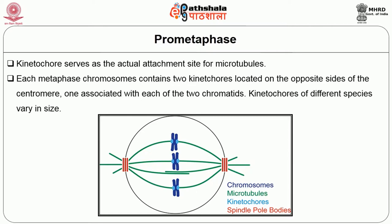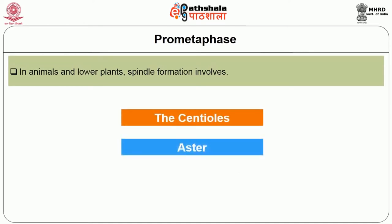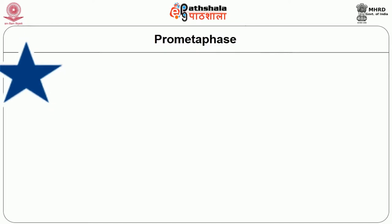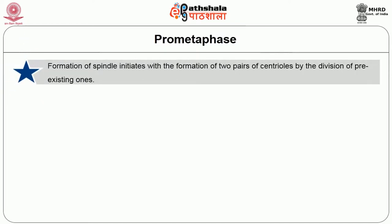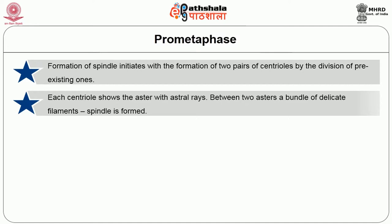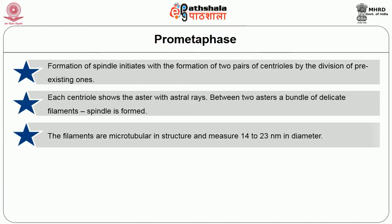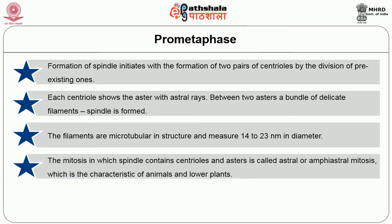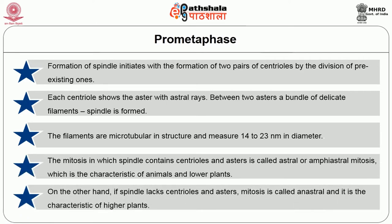Kinetochores of different species vary in size. In animals and lower plants, spindle formation involves centrioles, asters and astral rays. Formation of the spindle initiates with two pairs of centrioles dividing from pre-existing ones. Each centriole shows an aster with astral rays, and between two asters, a bundle of delicate filaments forms the spindle. The filaments are microtubular, measuring about 14 to 23 nanometers in diameter. Mitosis with centrioles and asters is called astral or amphiastral mitosis, characteristic of animals and lower plants; without them, it is called anastral, characteristic of higher plants.